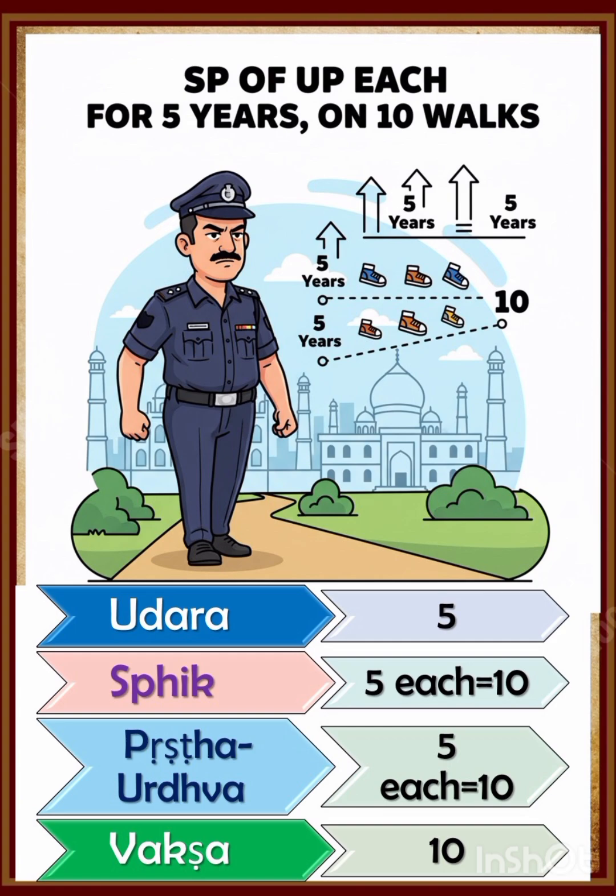SP of UP each for 5, making 10 on Vaksha. SP is Svik, and UP is Udara, Prishta, Urdhva — so Udara 5, Svik and Prishta Urdhva 5 each, total 10. And Vaksha is 10 Peshi.